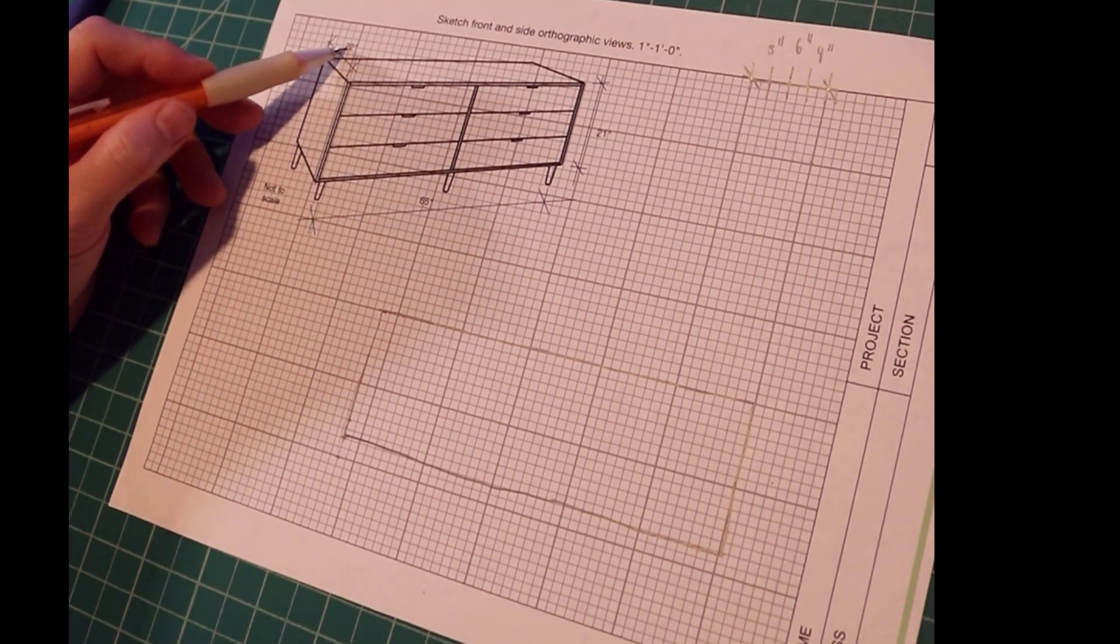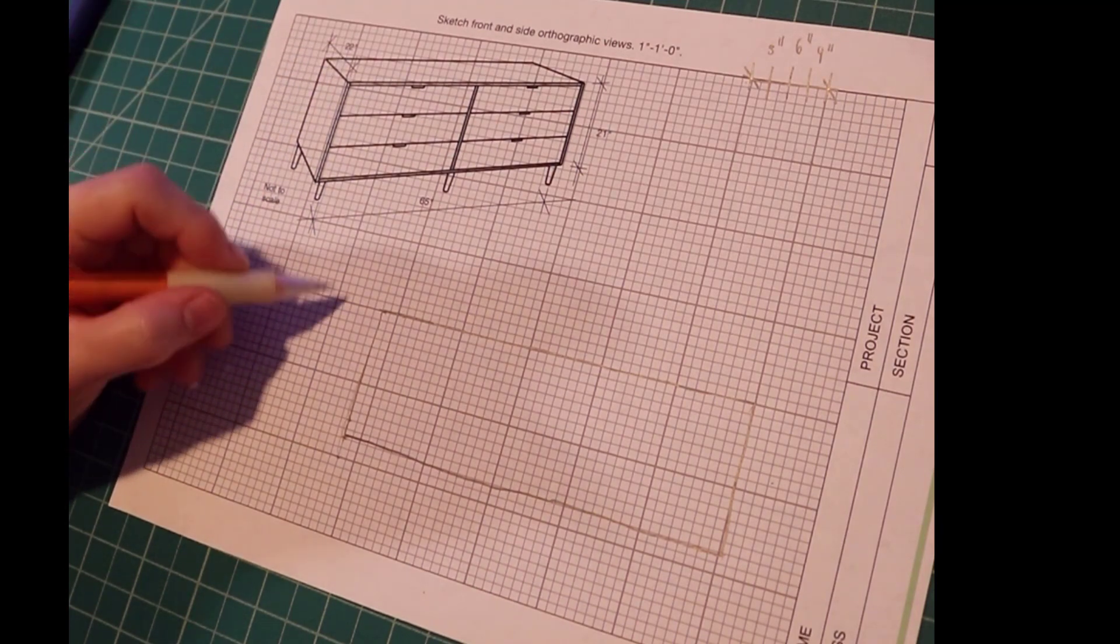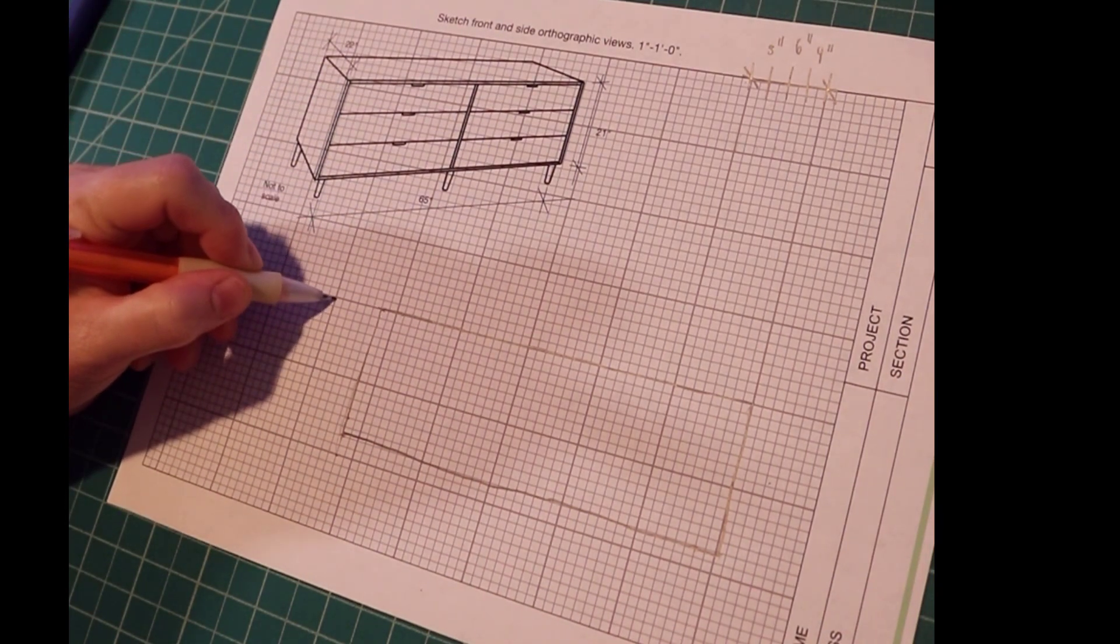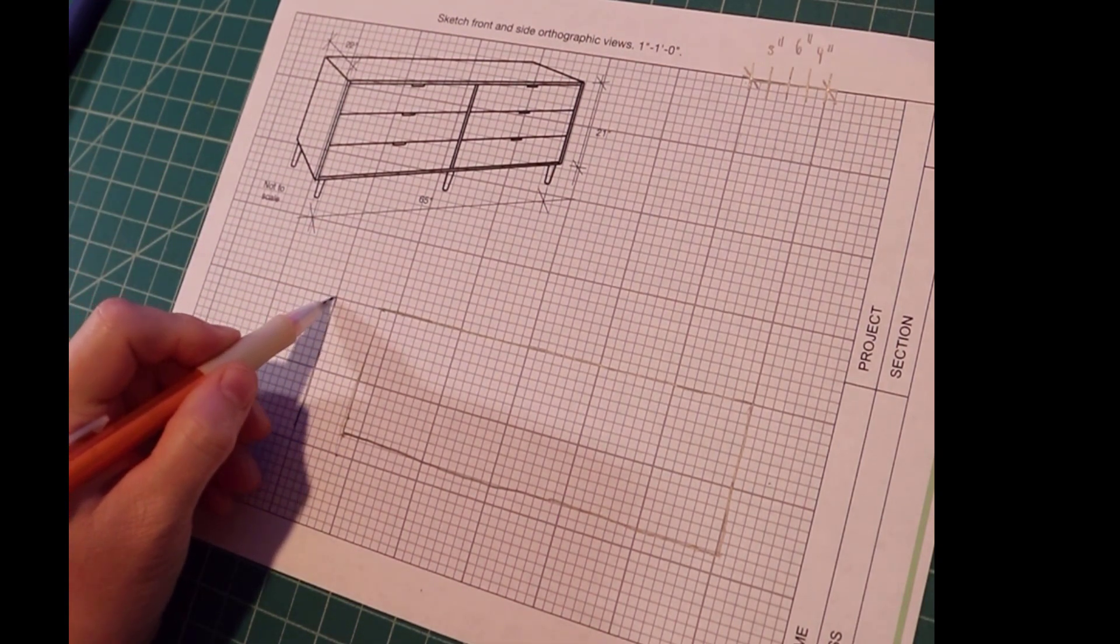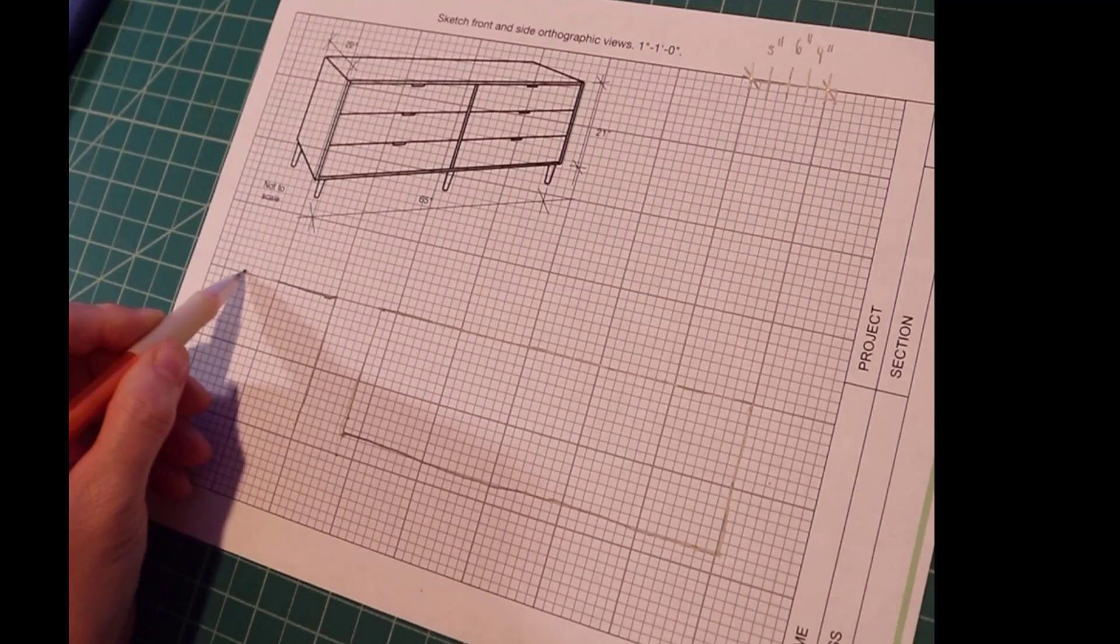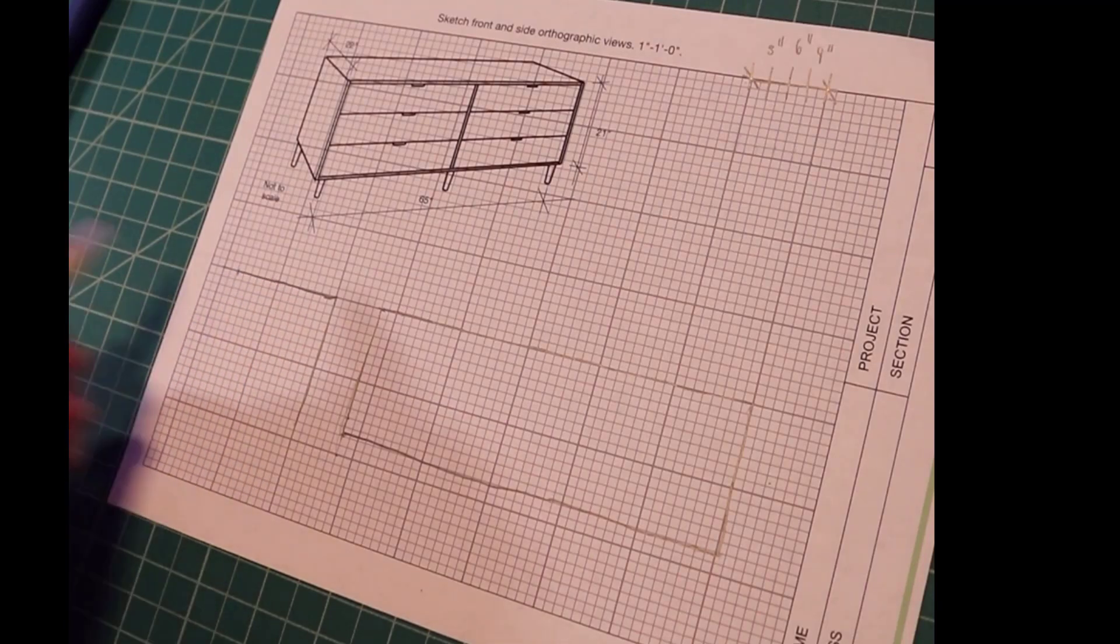Now let's look at the side, 22 inches. We know the height will be the same as in the front, and then there's 12, and here's 24, so 22 would be right about there.